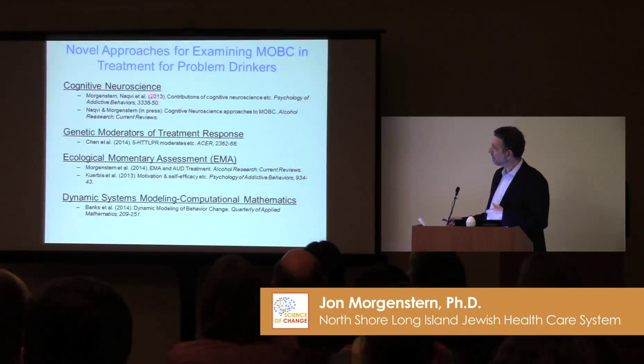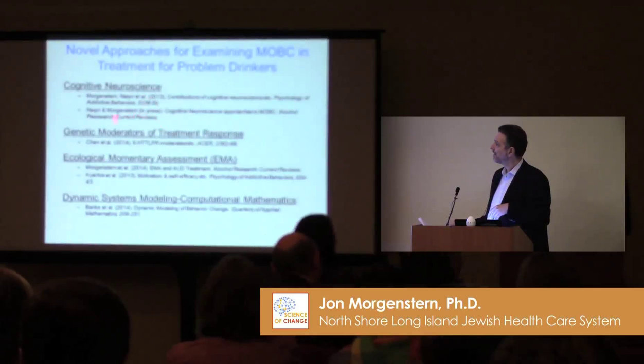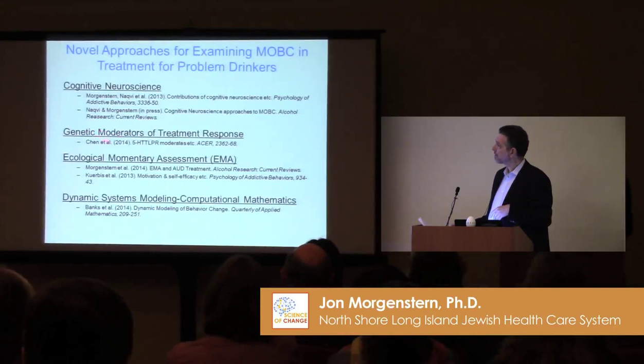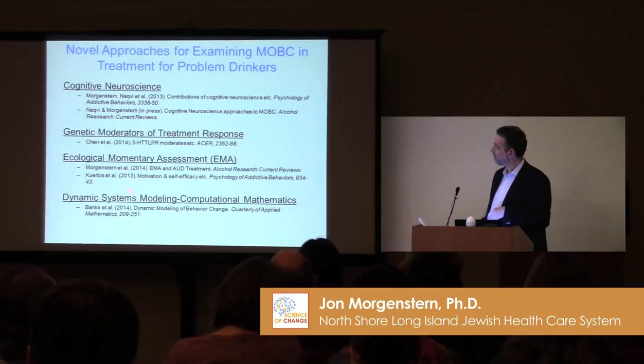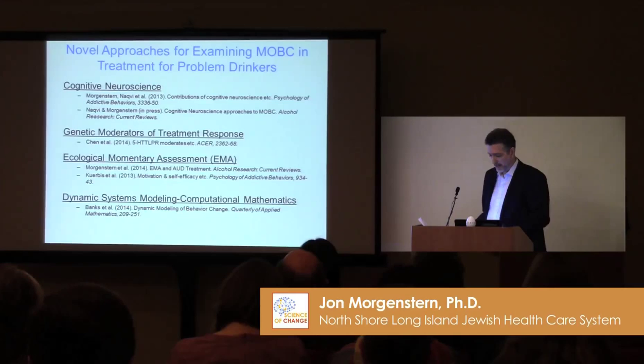Cognitive neuroscience is certainly one approach, and my colleague Nasser Nakfi has been instrumental in this work. We've also looked at trying to include genetics to help with heterogeneity — Andrew Chen has done excellent work looking at the serotonin transporter gene, showing that polymorphisms moderate the effect of CBT. And then we've done a lot of work with ecological momentary assessment and dynamic systems modeling to try to assess the dynamic characteristics of treatment and measure them in a multidimensional way.